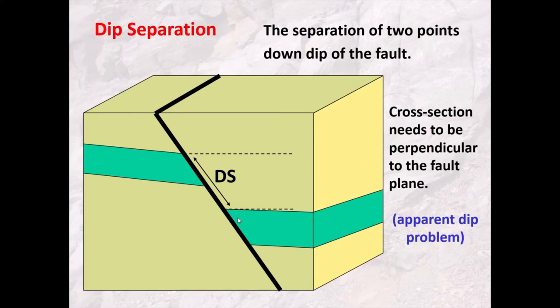To calculate dip separation accurately, we need to have drawn our cross-section perpendicular to the strike of the fault. If we don't do that, what we're seeing on the fault plane is an apparent dip, which is always less — and so our dip separation will also be less. We need to be aware of this apparent dip problem.